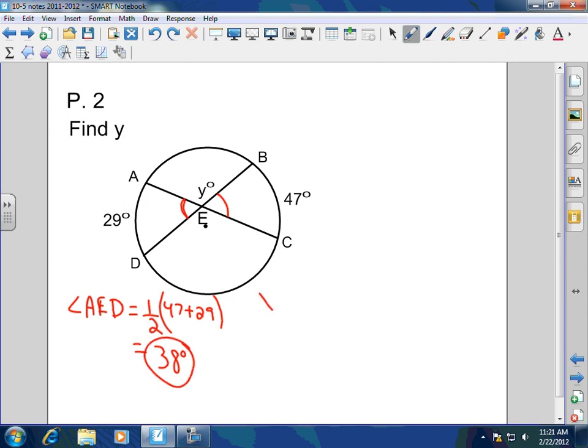So either one is going to be the same because they are vertical angles. So angle A, E, D equals what, my man? Half of 47 plus 29. And that is going to equal half of 76. So that would be 38 degrees. Now, what does Y equal? Very good. Since this is 38 degrees, and these are supplementary angles, 180 minus 38 would give you 142 degrees equals Y. So you have to do two calculations there. Is that understandable to y'all? Make sense?